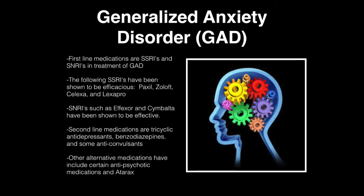The first-line medications for generalized anxiety disorder include SSRIs and SNRIs. SSRIs shown to be effective include Paxil, Zoloft, Celexa, and Lexapro. SNRIs such as Effexor and Cymbalta have also been shown to be effective. Second-line medications such as tricyclic antidepressants, benzodiazepines, and anticonvulsants have also been used, along with alternative medications including antipsychotics and Atarax.